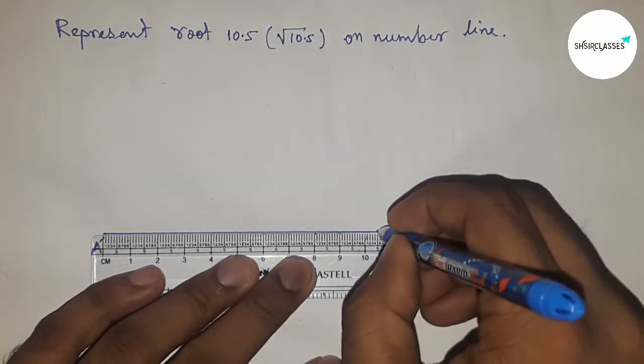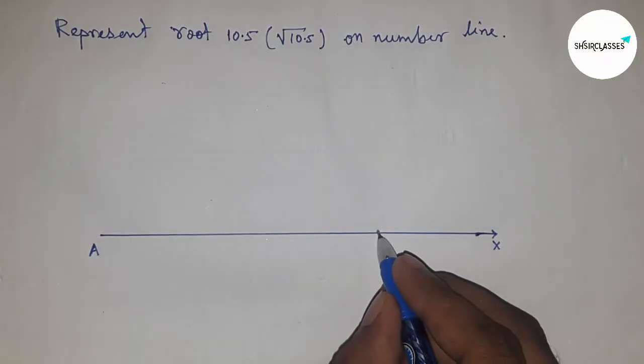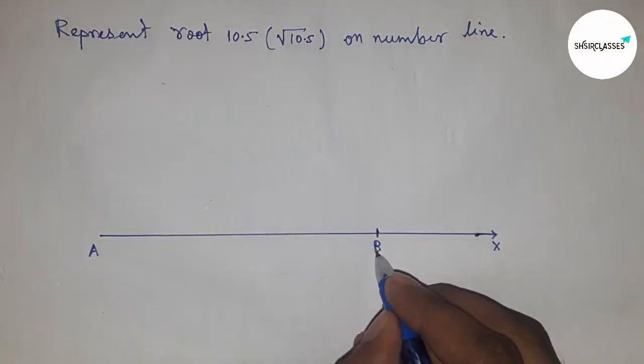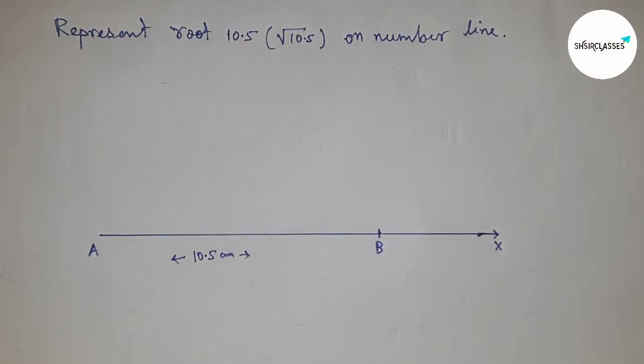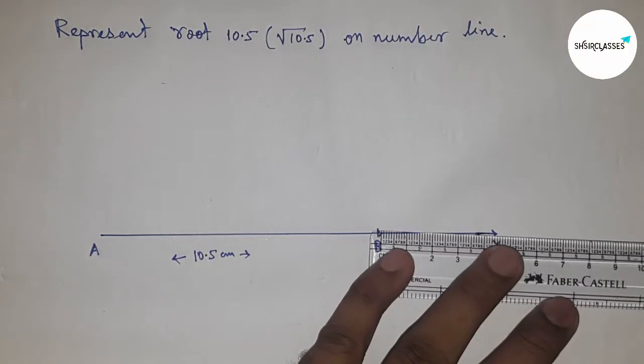This is 10.5 centimeters. This is point B, so now AB is a 10.5 centimeter line. Next, put the scale on point B.